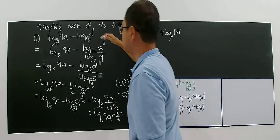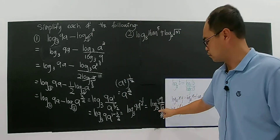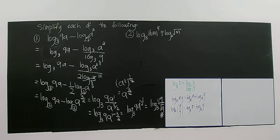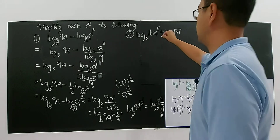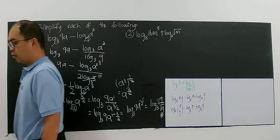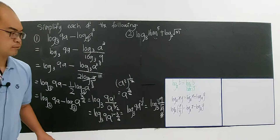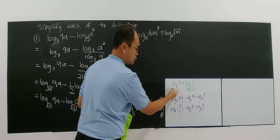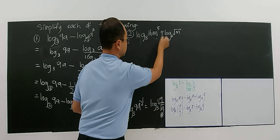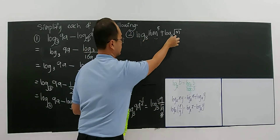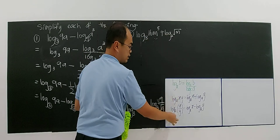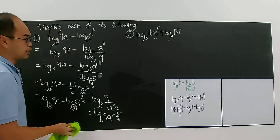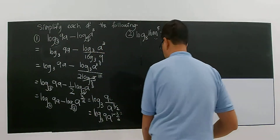So you have simplified from the original expression down to log base 3, with the lowest base being 3. Now let's look at the next example. If you don't fully understand the method — why I use this formula when the bases are different, I need to change the base such that the two are the same before applying the other two formulas.